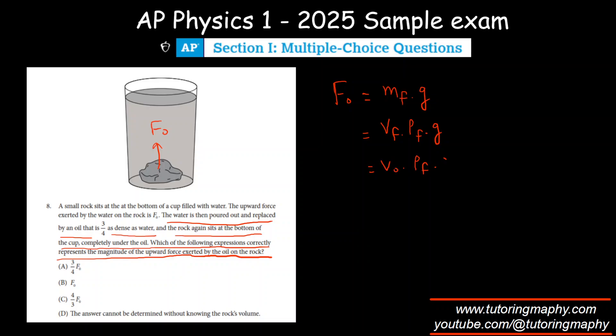In situation number one, F_naught is V_naught times rho of water times g.